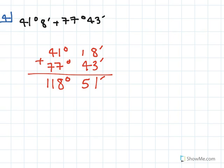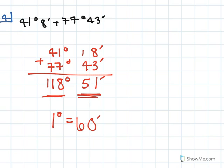It's important to remember that 1 degree equals 60 minutes. So if our minutes had added up to more than 60, we would have needed to carry degrees over and adjust our minutes accordingly. That's important to remember when you're working with degrees, minutes, and seconds.